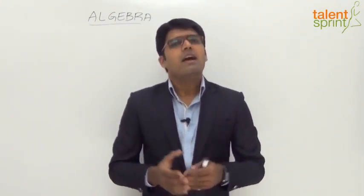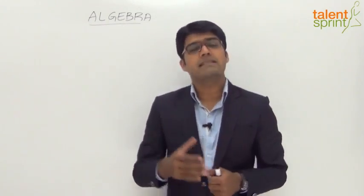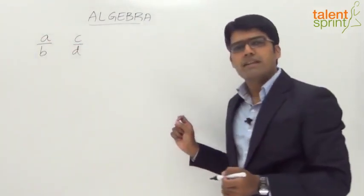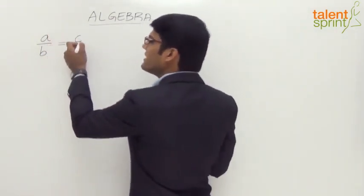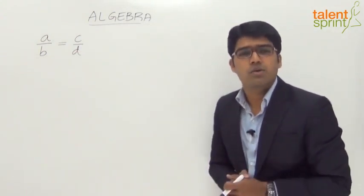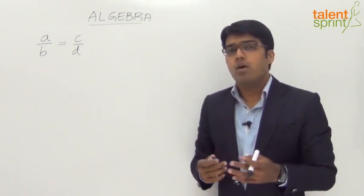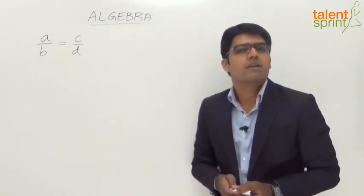Let us now look at a few methods of simplification based on fractions that can be helpful in answering questions from algebra and other topics like surds, indices, etc. Generally, when we have two fractions that are in proportion, we can apply different methods of simplification to arrive at the correct answer much faster. Let us consider two fractions in proportion: a by b and c by d. When we say the two fractions are in proportion, they are equal — the ratio of a to b is equal to the ratio of c to d.